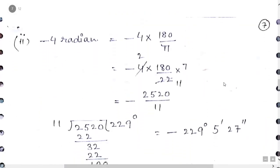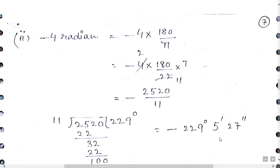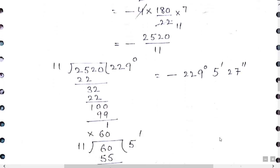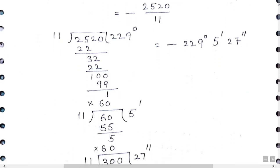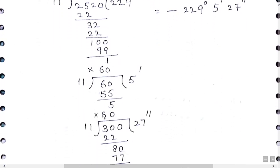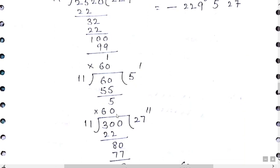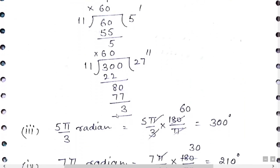For −4 radian, simply multiply by 180/π, then insert the value of π. We get 2520/11. Dividing, we get 229 degrees; remainder 1, multiply by 60 gives 5 minutes with remainder 5; multiply by 60 again to get 27 seconds. The answer is 229 degrees, 5 minutes, and 27 seconds.